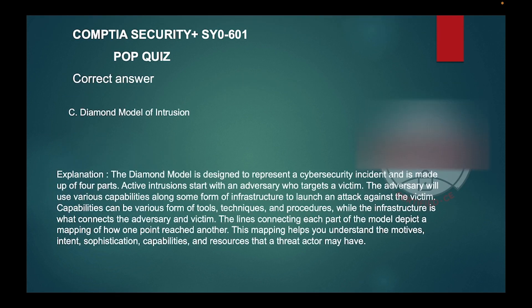The correct answer is C, Diamond Model of Intrusion. The Diamond Model is designed to represent a cyber security incident and is made of four parts. An active intrusion starts with an adversary who will target a victim. The adversary will use various capabilities along some form of infrastructure to launch an attack against the victim. Capabilities can be various forms of tools, techniques, and procedures, while the infrastructure is what connects the adversary and victim.